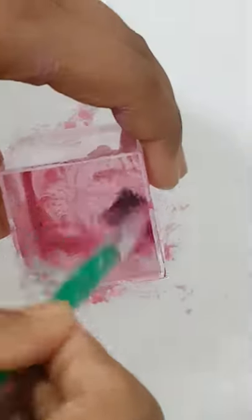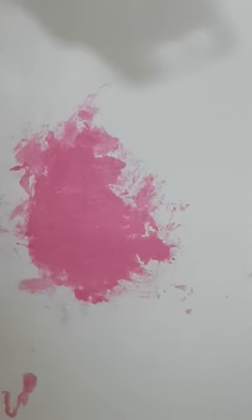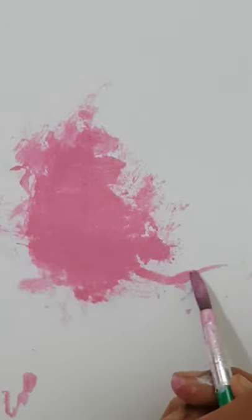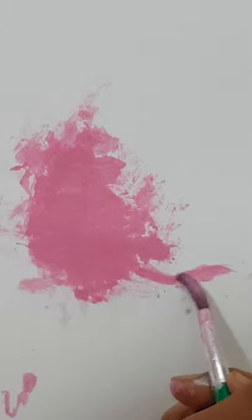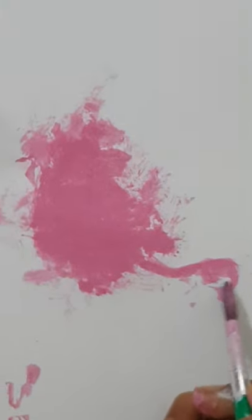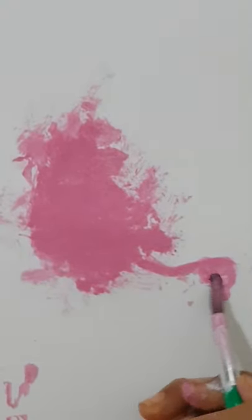So now I'm happy with my body of the flamingo. Now you take the pink paint again, but this time we paint it. So we take the pink paint and make a line here for the head and the neck. Make it nicely, like that.